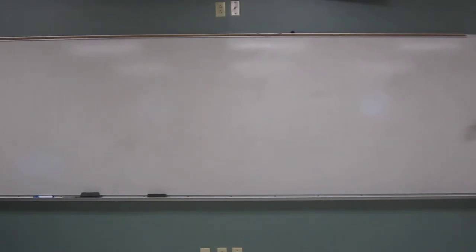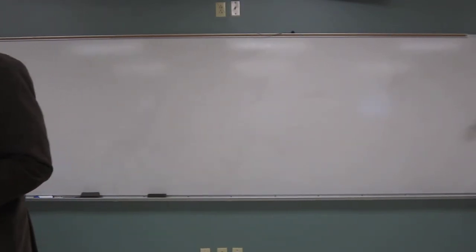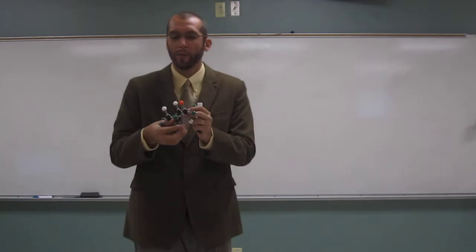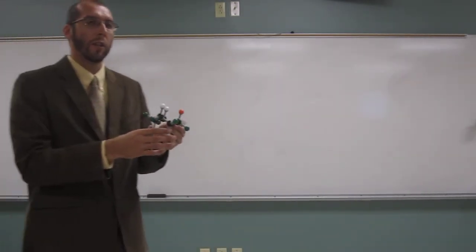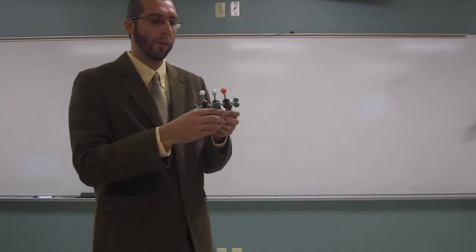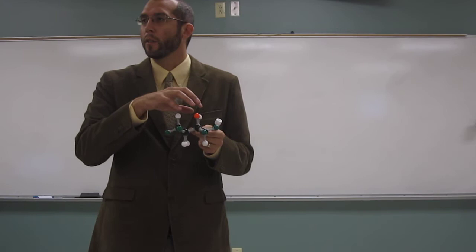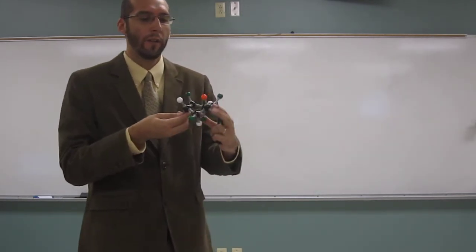Let's learn how to draw cyclohexane rings. We can do chair flips or ring flips. When we do that, the axial bonds will turn into equatorial bonds. Let's show that on the video using a 3D model.